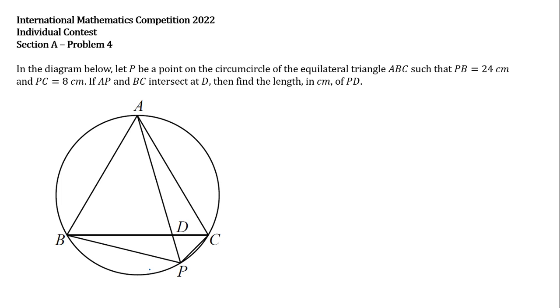PC equals 8 cm. If AP and BC intersect at D, then find the length in cm of PD.